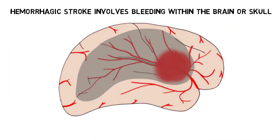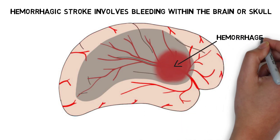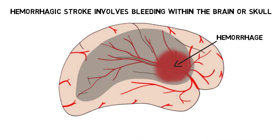Hemorrhagic stroke occurs when a vessel begins to bleed into the brain. This might happen, for example, if an aneurysm bursts or if a small artery ruptures in someone with chronic hypertension. Hemorrhagic stroke can lead to ischemia when blood supply to an area of the brain is disrupted, but it can also result in tissue damage due to blood collecting outside of blood vessels.